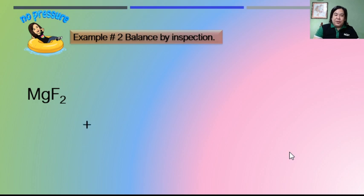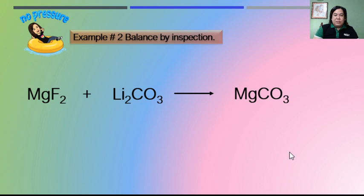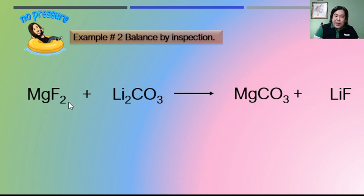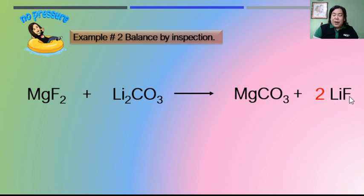Next example: magnesium fluoride reacts with lithium carbonate to produce magnesium carbonate and lithium fluoride. This is a bit more complicated because there are more atoms to balance. Start with the obvious — magnesium is one on both sides. Fluorine has a subscript of two on the reactant side but only one on the product side, so immediately place a coefficient of two before lithium fluoride. Two times one equals two, so fluorine is now balanced. This also makes lithium two on the product side, which matches the two already present on the reactant side, so the reaction is already balanced.